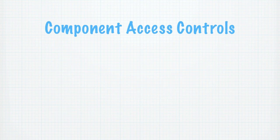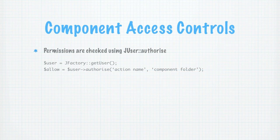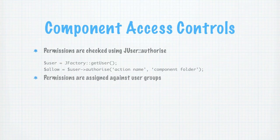We touched on access checks very briefly in a previous lesson where we created the master controller for the component. You'll recall that we do access control checks on permissions we're allowed to perform using the user object's authorise method. Typically in the code we would get the object for the current user by calling jfactory.get_user, and then we can call the authorise method. You should also recall that this method takes two arguments: the first being the name of the permission we're wanting to check, and the second will be the name of the component's folder.